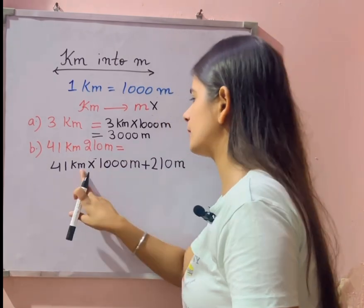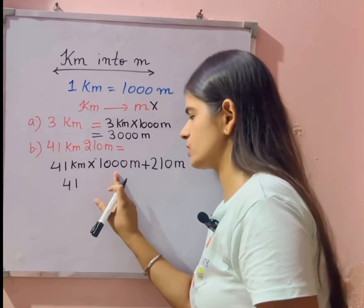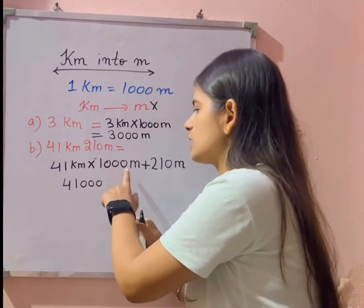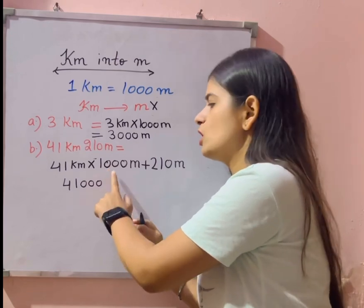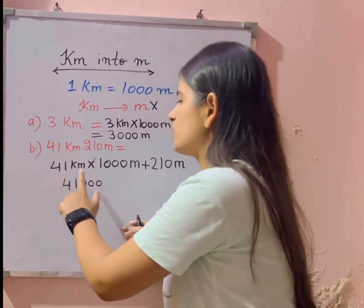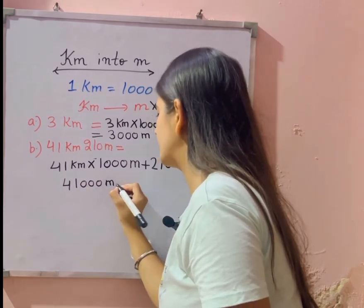solve karenge. Sabse pehle hame isko multiply karenge: forty one kilometer into thousand. So kya jayega hamara? One, two, three zeros laga dengi. Kitni zeros hain isme? Thousand me three. To utni hi zeros hamari number ke baad aa jayegi. Forty one ones are forty one, aur jitni zeros utni hum likh de. Yeh ho gaya humara meter